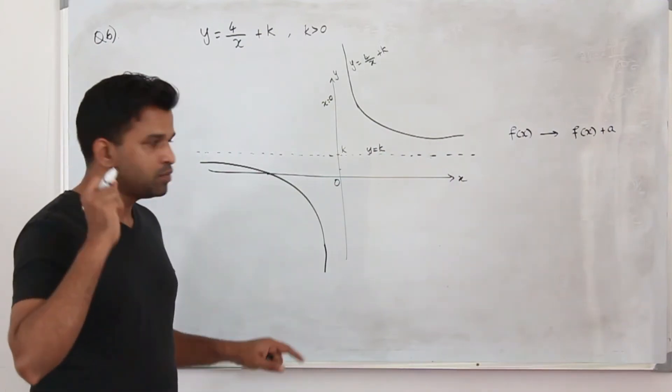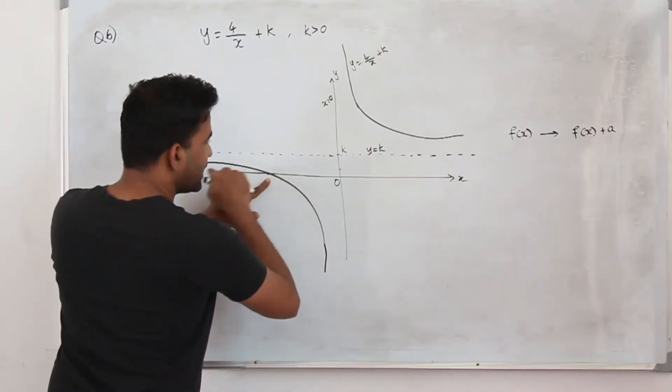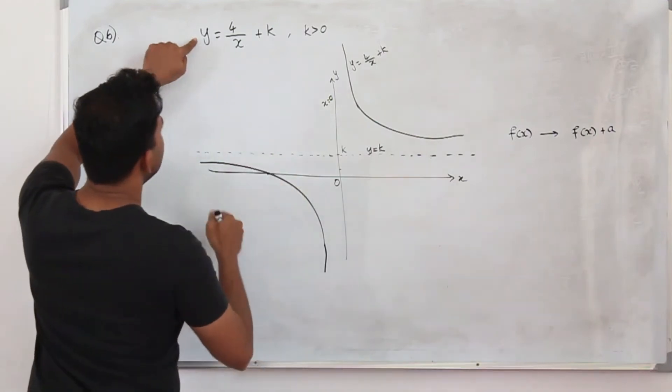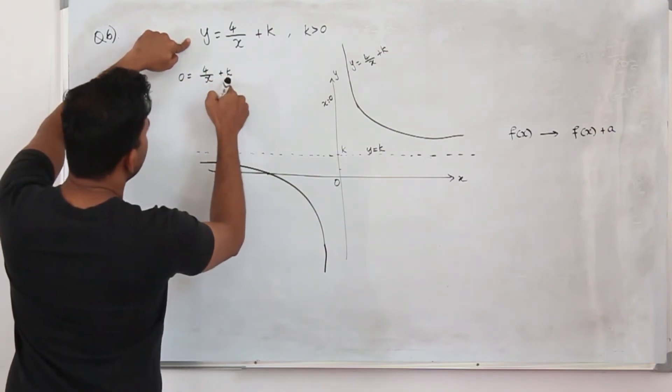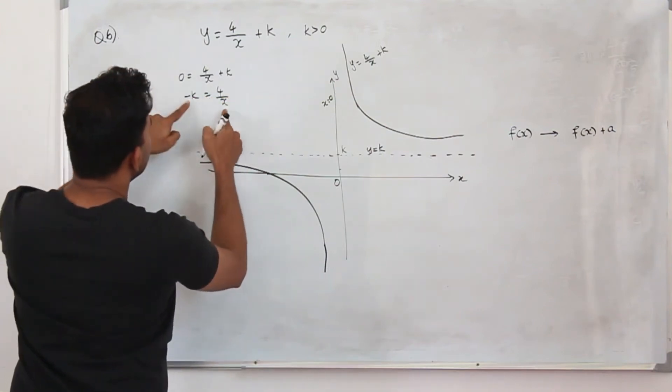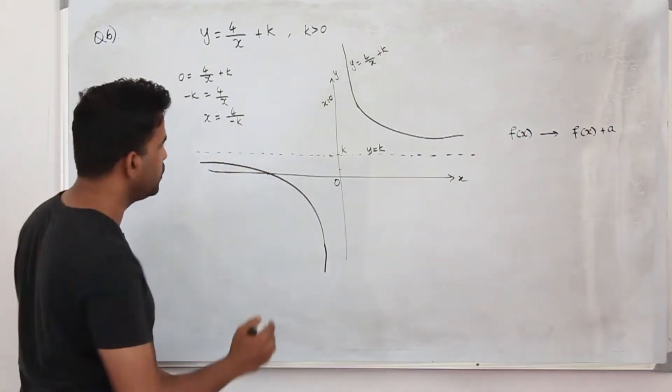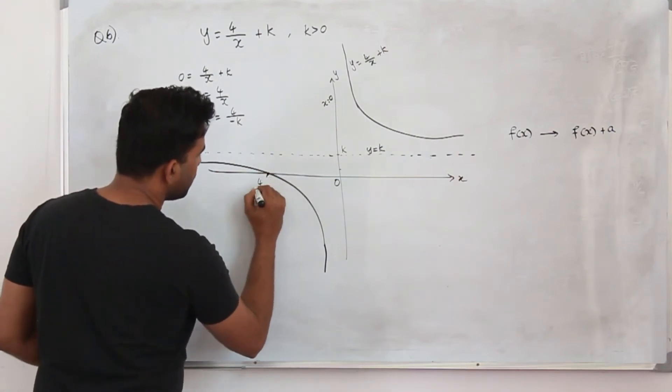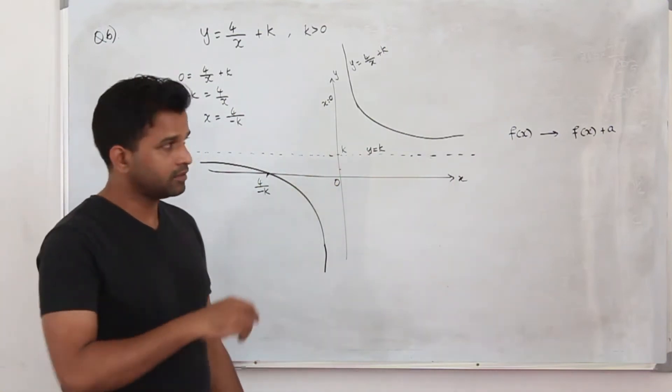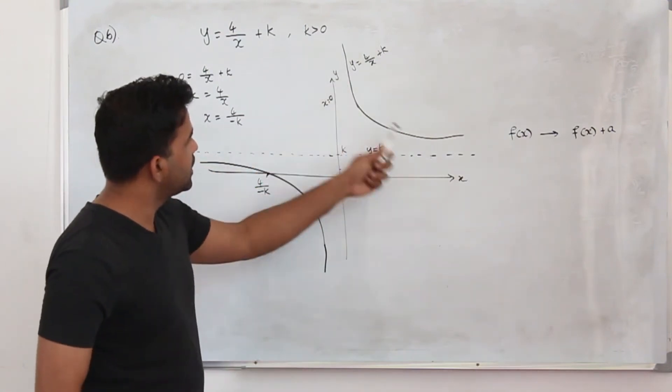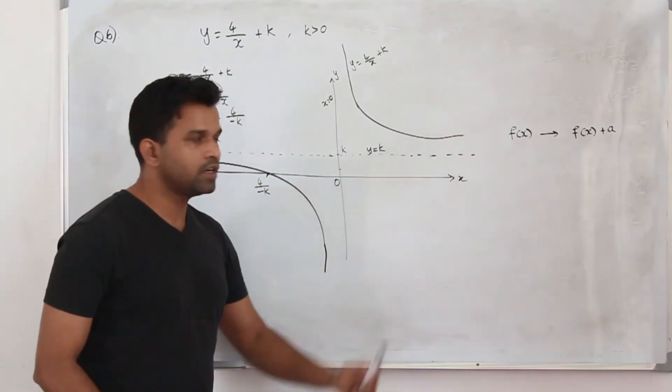If they ask you to plot this point where the curve crosses the coordinate axis, when the curve crosses the x-axis, the y-coordinate will be 0. When you replace y is 0 here, your 0 is 4 upon x plus k. Bring the k here. Minus k is 4 upon x. So swap them. Your x is 4 upon minus k. We don't know the exact value, but this point is 4 upon minus k. We have sketched the graph and plotted the point where the curve crosses the coordinate axis and the horizontal asymptote is y equals k.